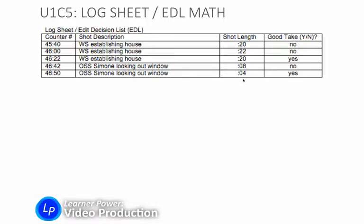And then here's the length of each of these shots. And I'm working in seconds by the way. I'm not working in frames for this lesson. So this is all seconds. What we see on this counter screen right here is this is 45 minutes and 40 seconds. And here's 46 minutes and 0 seconds. 46 and 22 seconds. And let's break down what this is going to look like when we're adding these numbers.